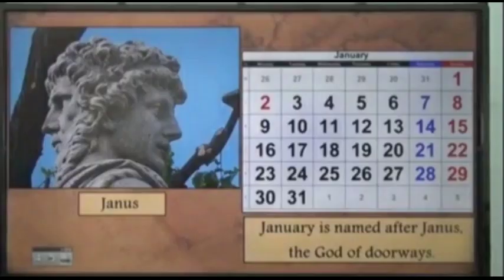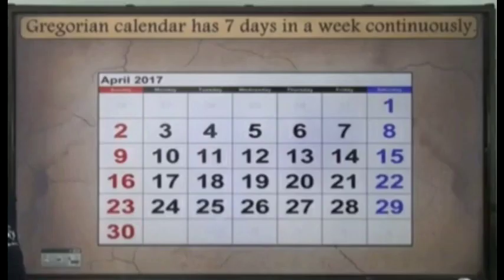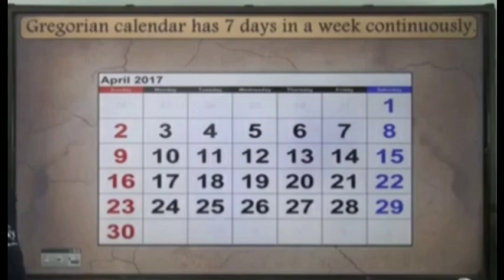Do you know, January is named after Janus, the god of doorways. How many weeks are there in a year? There are 52 weeks in a year. And how many weeks are there in a month? There are 4 weeks in a month. Now, see the calendar: 1 to 7 is the first week, 8 to 14 the second week, 15 to 21 the third week, and 22 to 28 is the fourth week. So every month has 4 weeks.